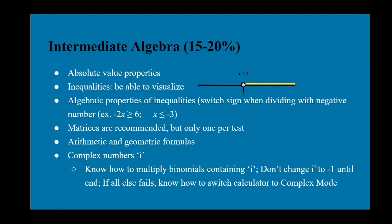Intermediate algebra is 15 to 20 percent. Topics include absolute value properties: a negative number inside absolute value becomes positive, and a negative outside the absolute value makes the result negative. Solving inequalities is very important, and so is visualizing them — knowing that x greater than 4 has an open circle and extends to the right. Also remember the algebraic property that when dividing an inequality by a negative number, you must flip the inequality sign.